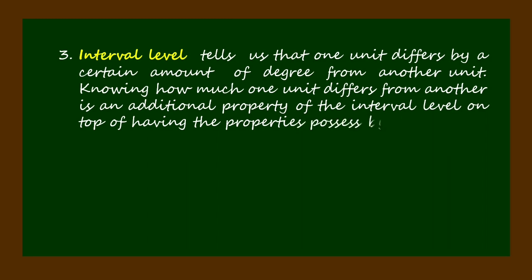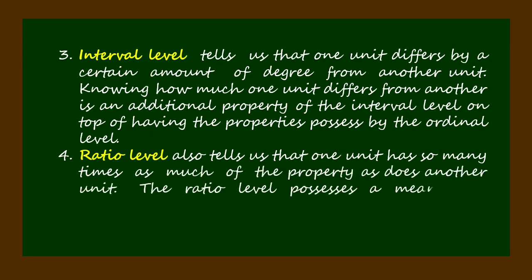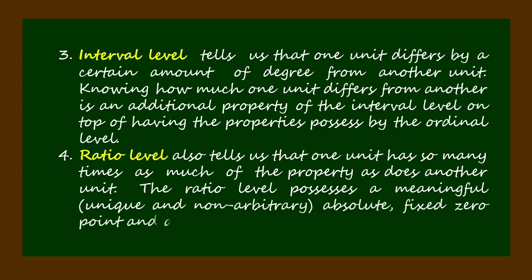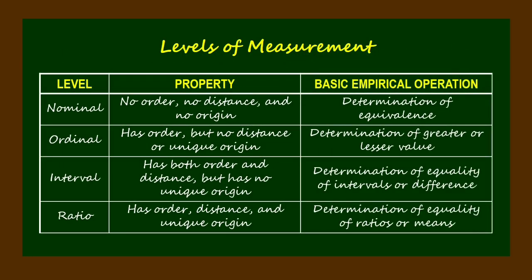Ratio level also tells us that one unit has so many times as much of the property as does another unit. The ratio level possesses a meaningful, unique, and non-arbitrary absolute fixed zero point and allows all arithmetic operations. For a brief yet comprehensive description of the levels of measurement, we may consider the preceding table.